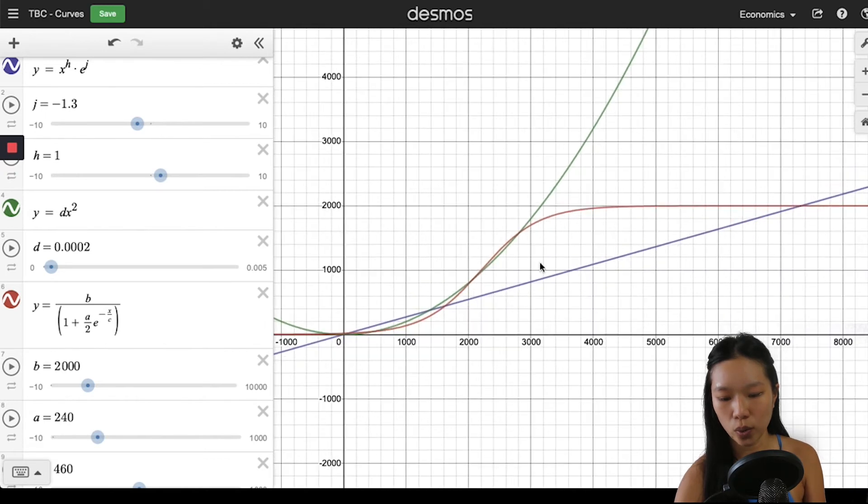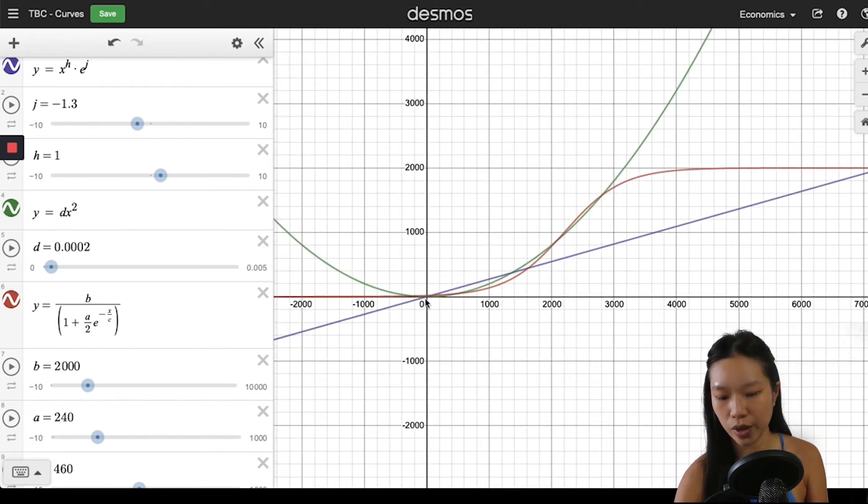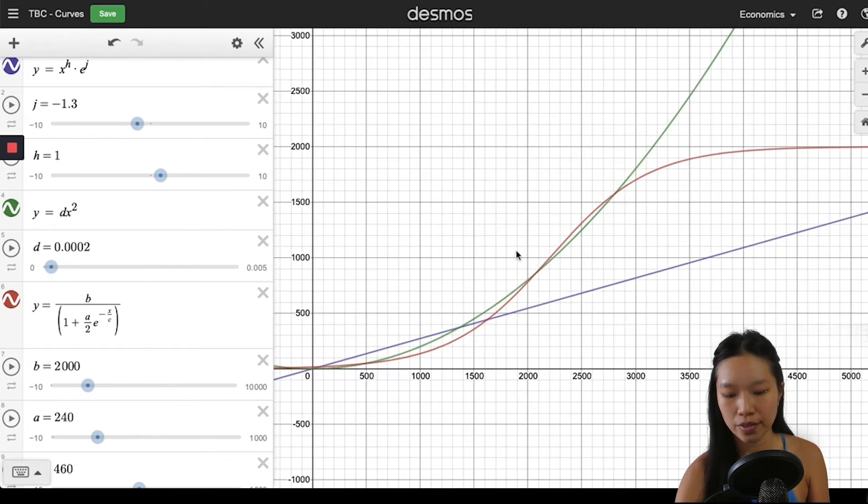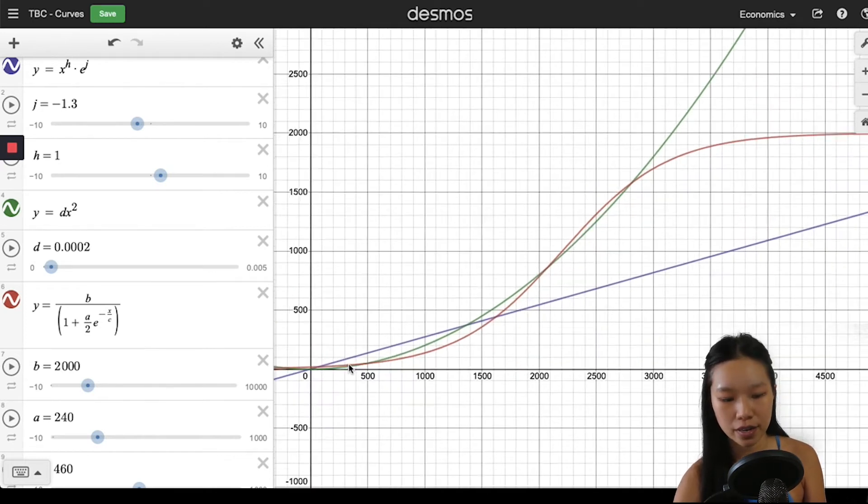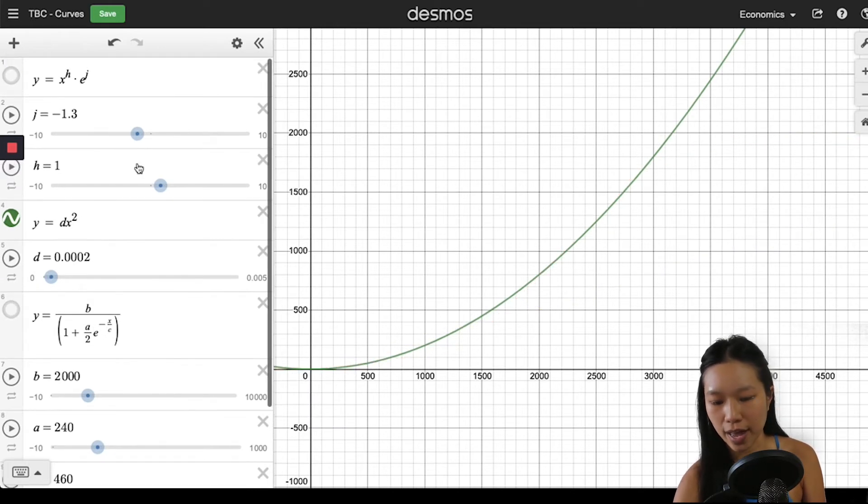then you can see that it's a gentle upward sloping curve. At first the curve is quite gentle - you see the increase is a bit less.